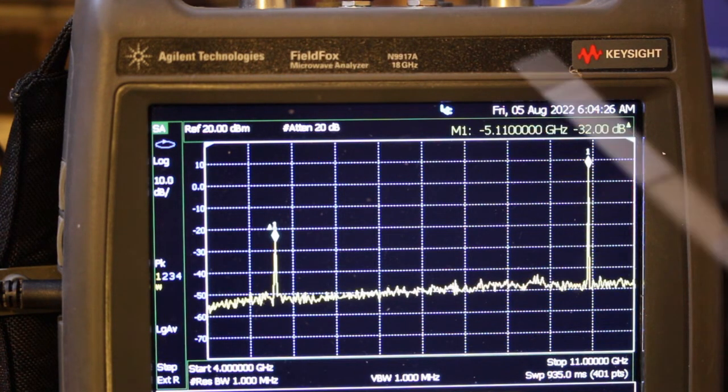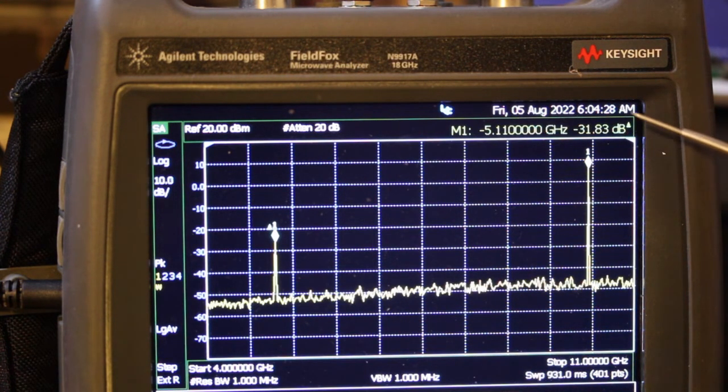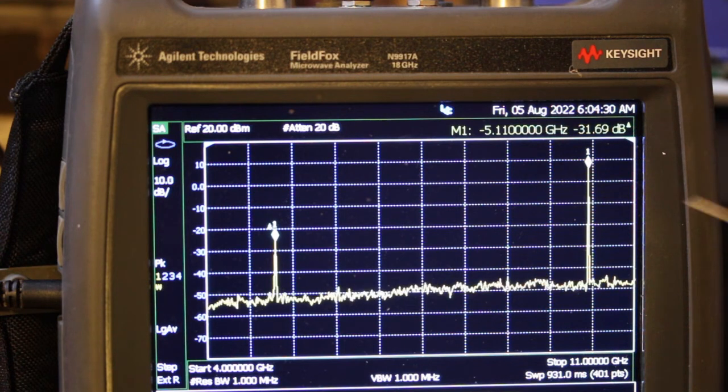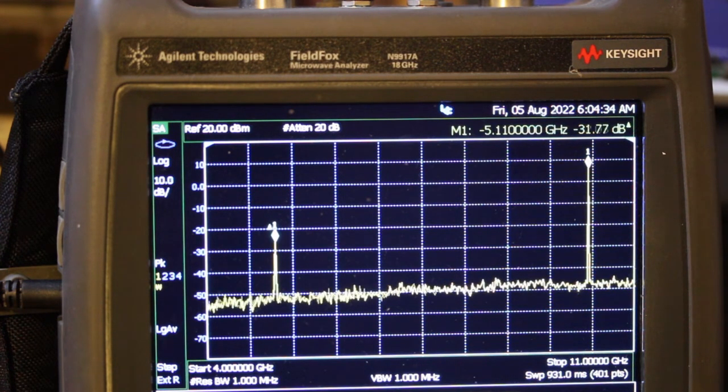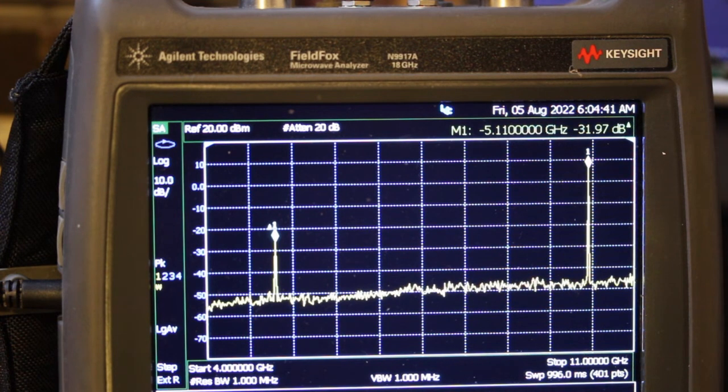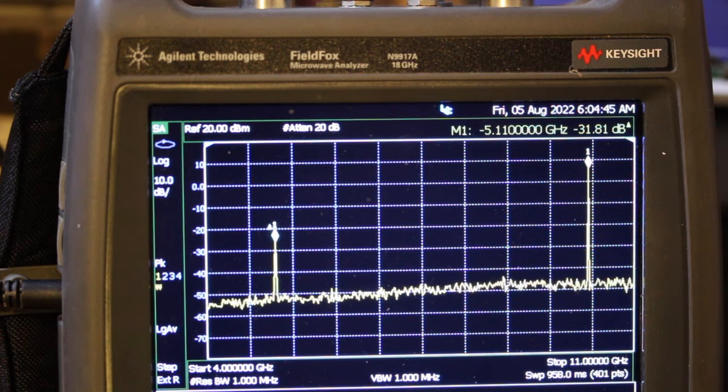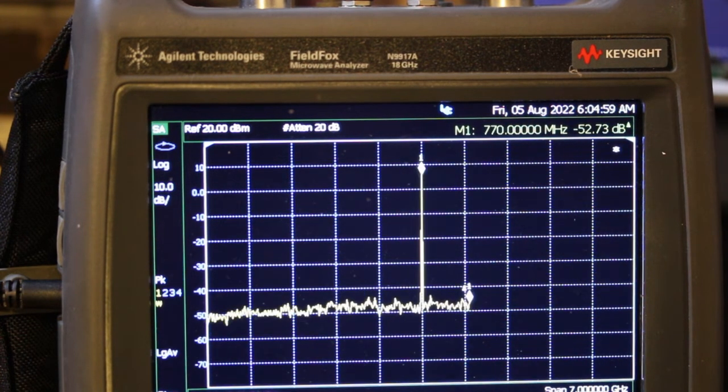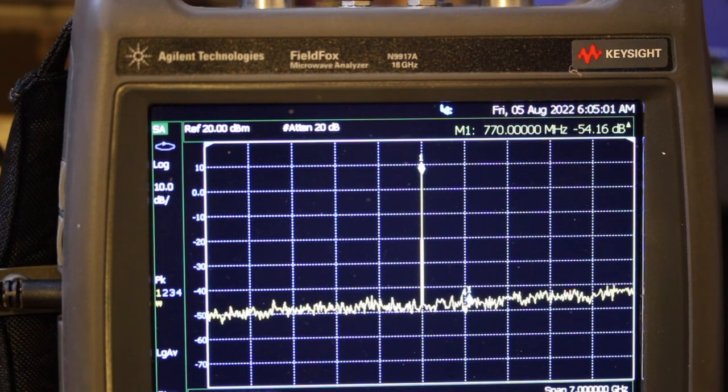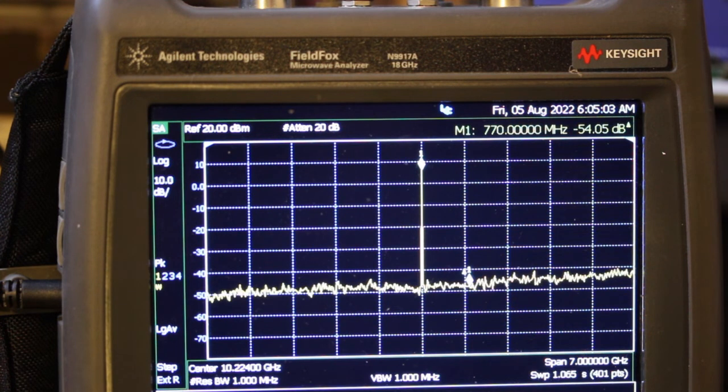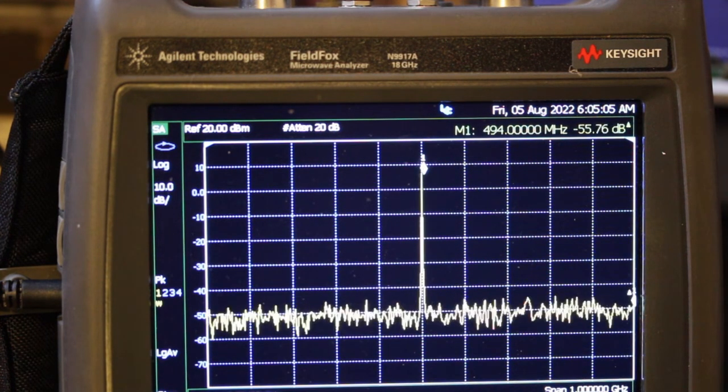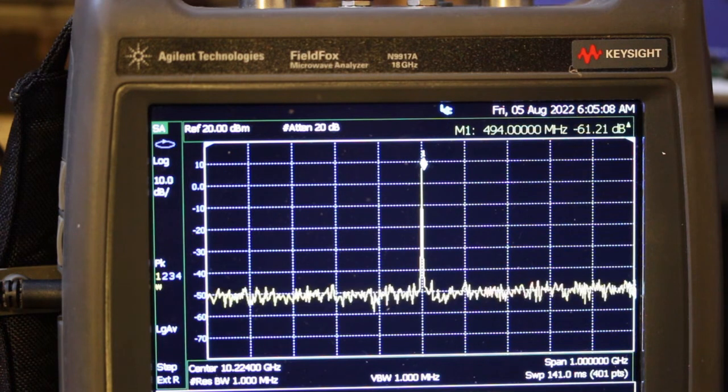This spike here is the 5.512 GHz feed through, and it's about 32 dB below the output level. Now let's change the center frequency to 10.224 GHz, and span 1 GHz, and let's pick the marker.